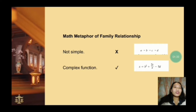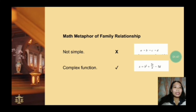Watzlawick also uses a math metaphor to describe family relationships. According to him, family relationship is not simple like a basic equation. Rather, it is complex, like mathematical functions linked to multiple variables. The variables A, B, C, or D affect the variable X, and these variables represent attitudes, emotions, or physical conditions.